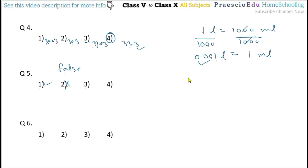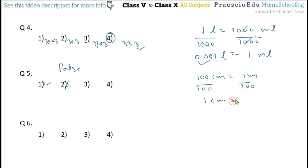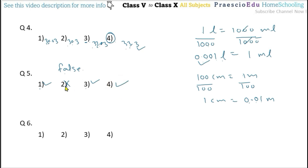Option 3: 1 centimeter equals 0.01 meter. This is correct because 100 centimeters equals 1 meter. Dividing both sides by 100, we get 1 centimeter equals 1/100, which is 0.01 meter. So option 3 is correct. Option 4: 0.1 gram equals 1 decagram — this is also correct. So the false statement is option number 2.